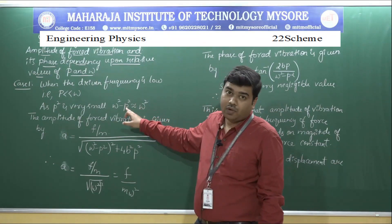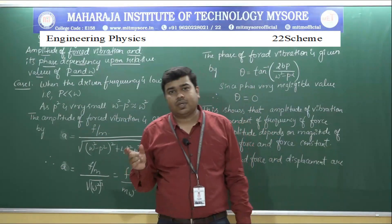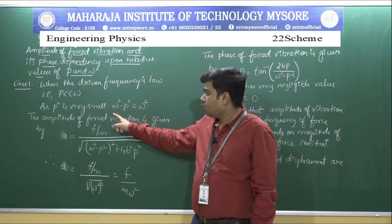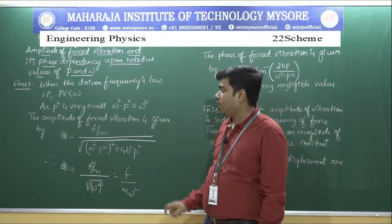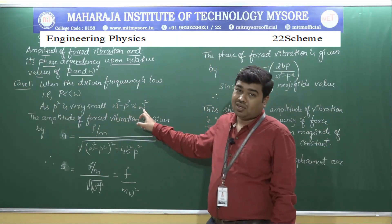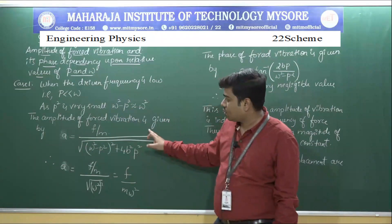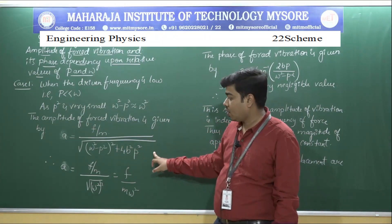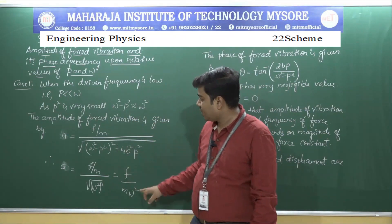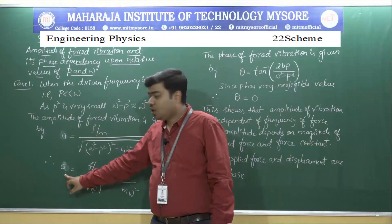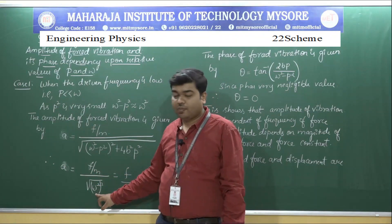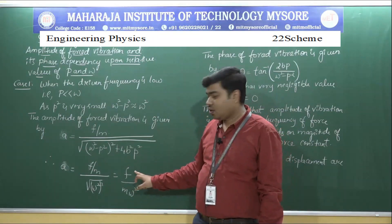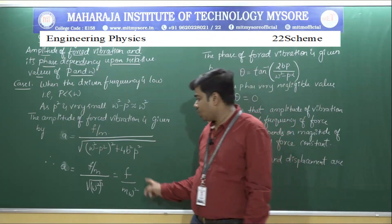Since p squared is very negligible, the whole value of omega squared minus p squared is nearly equal to omega squared. Substituting into the amplitude equation, the term with p squared also becomes negligible, so the amplitude simplifies to: a = F/m divided by the square root of omega squared squared, which gives a = F/(m * omega squared).